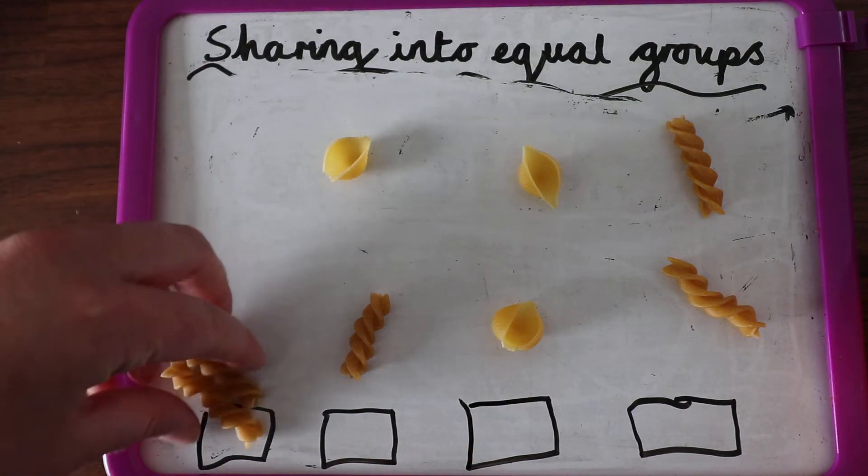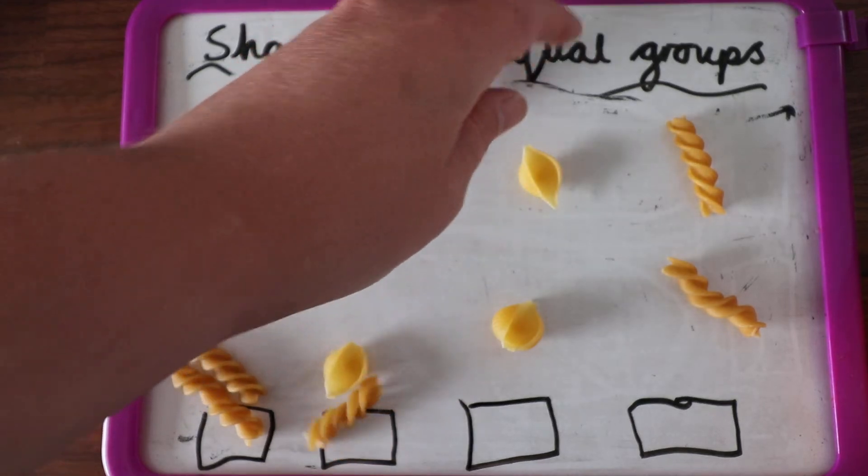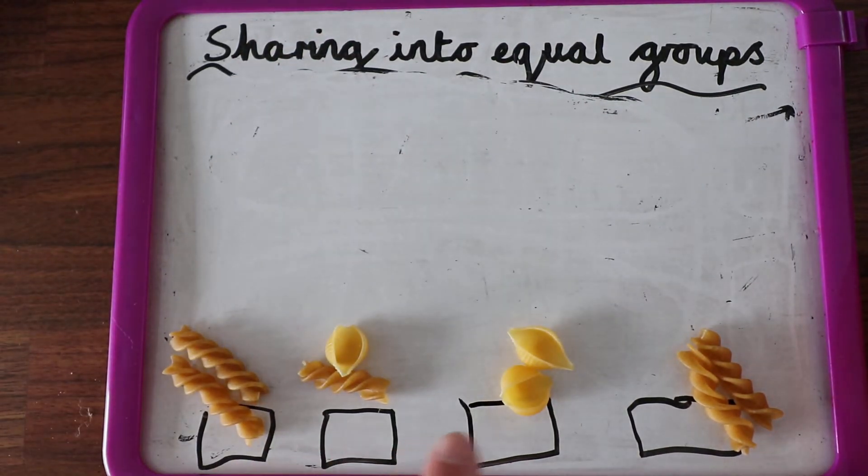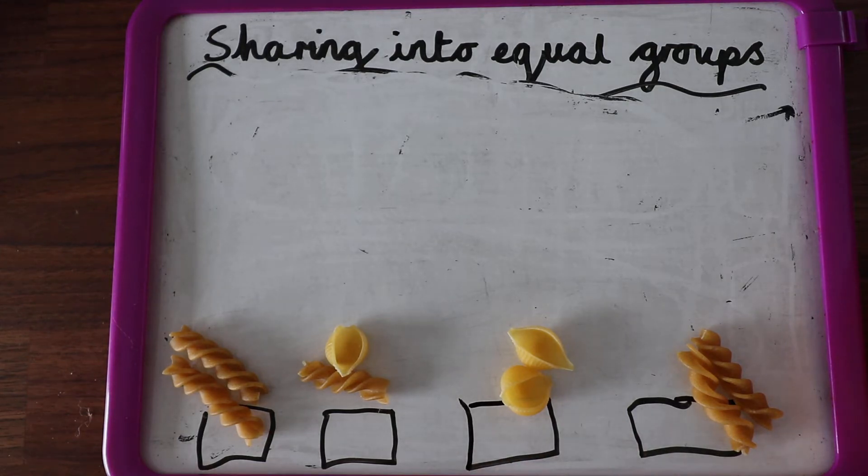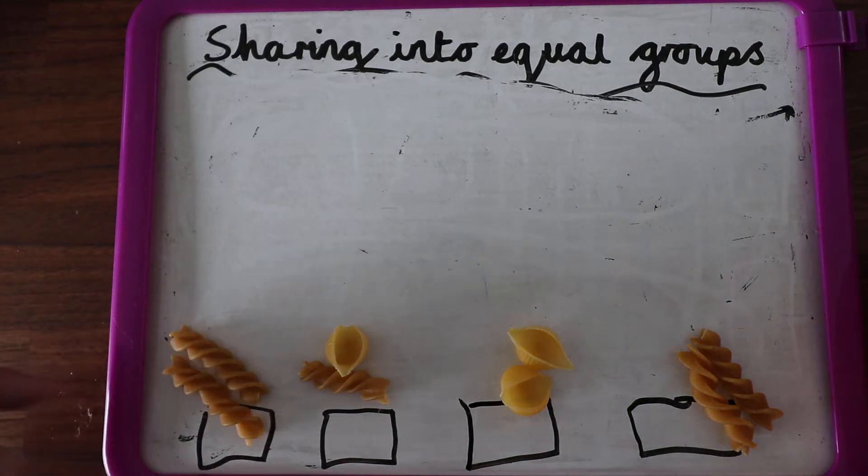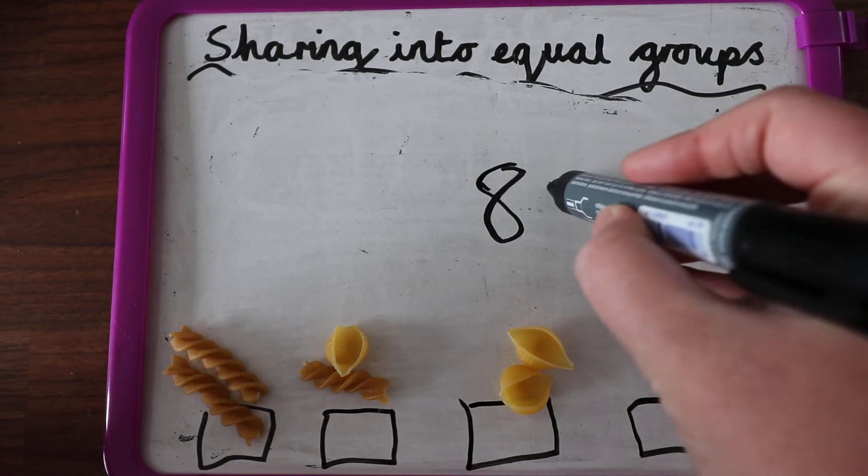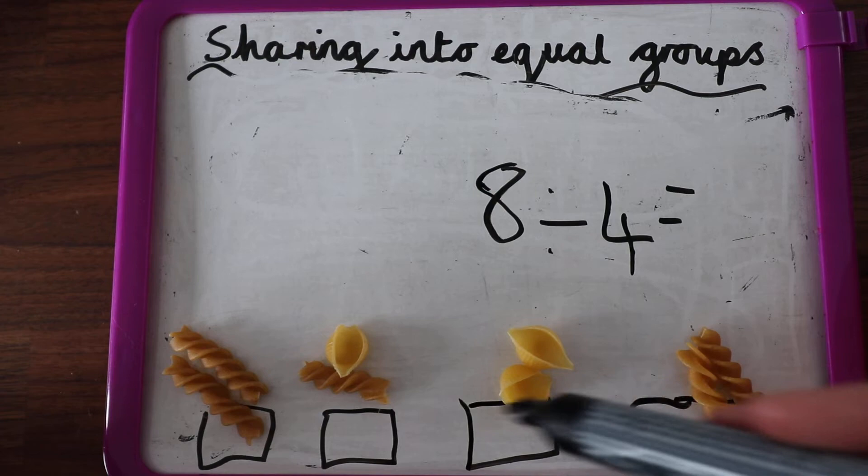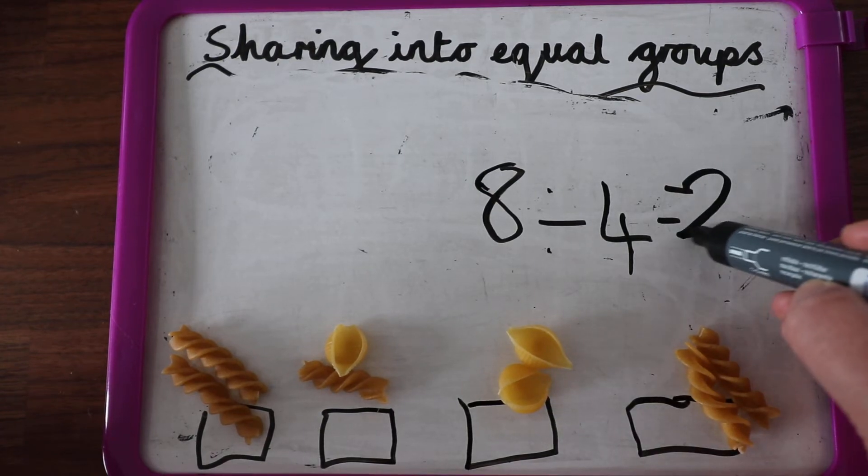So I'm just going to do this because I know they're in equal groups already. They're in equal groups. So now I have got four groups of two. So I know eight. So what I worked out was eight shared into four groups. How many have I got in each group? I've got two.